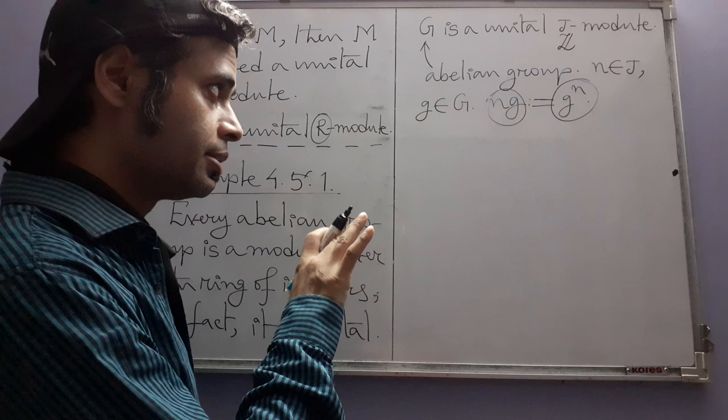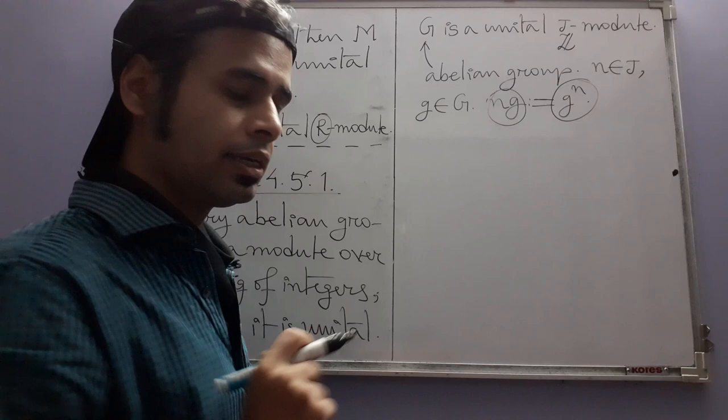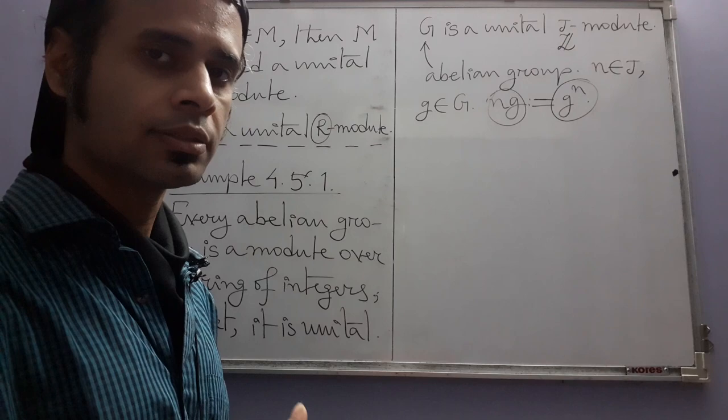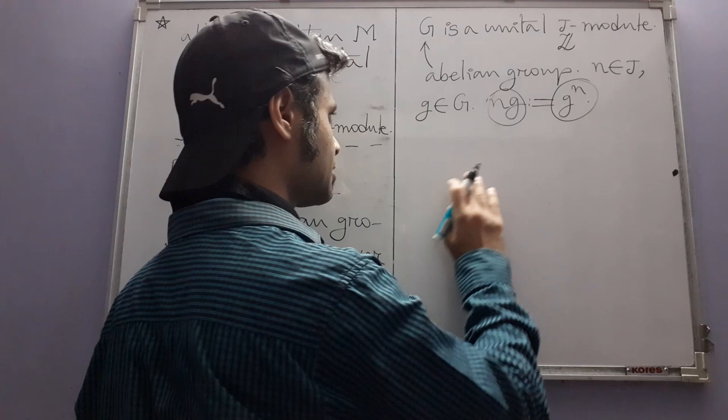Now we check whether the module axioms are satisfied. Take integers n and m as ring elements, and group elements g and h. For condition (1), n(g+h) equals (gh)^n, and since G is abelian we can write this as g^n · h^n, which in our notation is ng + nh. So the first condition holds.